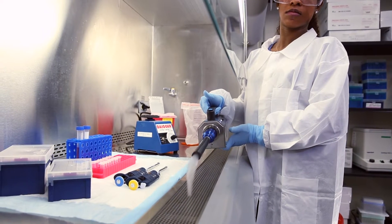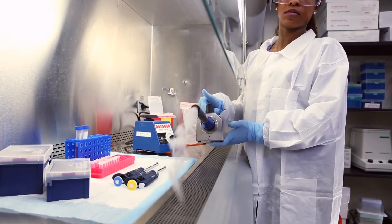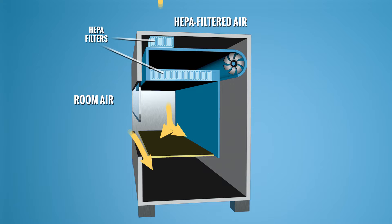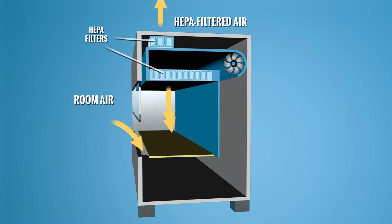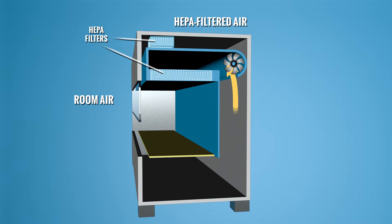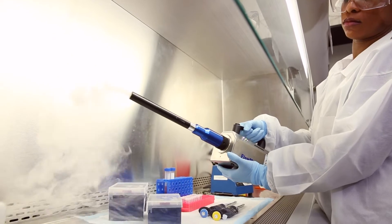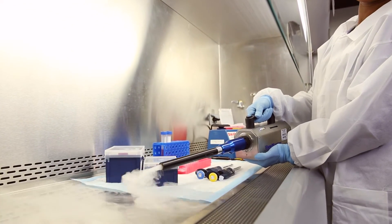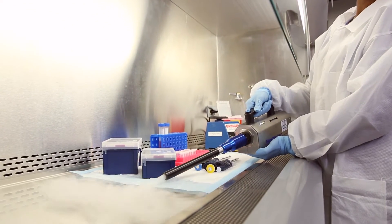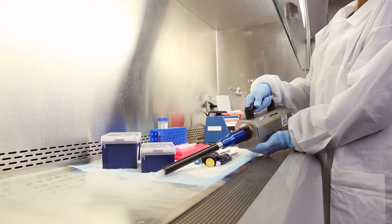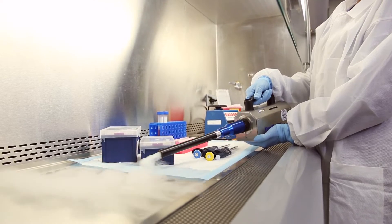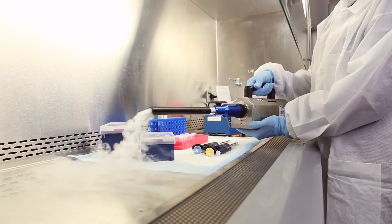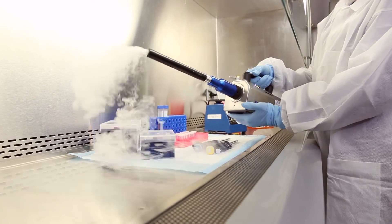To protect the work product, the cabinet's downward air is cleaned by a high efficiency filter within the cabinet. Upon reaching the work surface, roughly half of the downflow air moves toward the front grill and the other half moves toward the back grill.